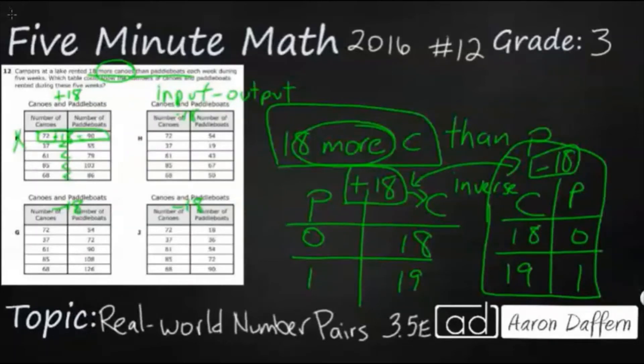So we do have, at least on H, we do have our canoes as greater than our paddle boats. So that's a good step right there. And 72 minus 18, does that make 54? Let's see. 72 minus 18. We have to regroup there. It does look like that might be minus 18. Let's test another one just to make sure. Let's do, just pick a random one. 85 and 67. So 85 minus 18. Does that make 67? So that's going to be yes. So it looks like H is going to be our answer.